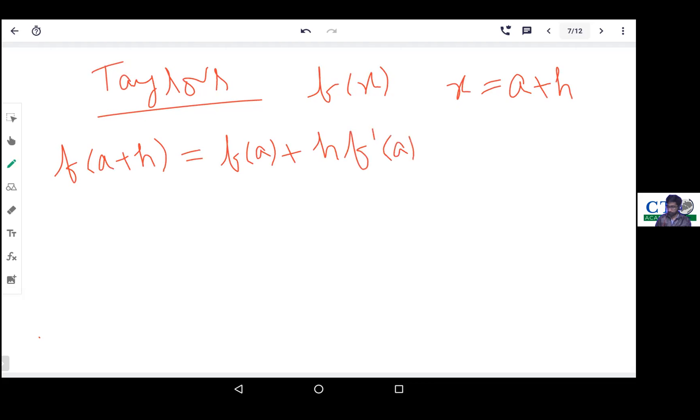Then f(a+h) will be expanded like f(a) plus h times the first derivative f'(a) plus h squared upon 2 factorial times f double dash (a), and so on. This is the Taylor's formula.